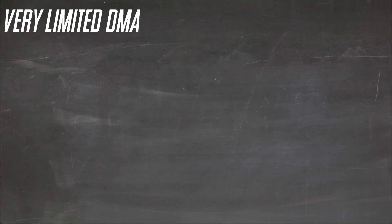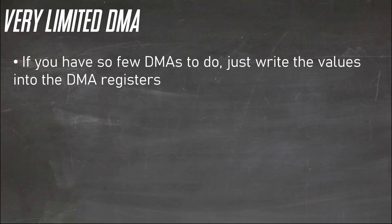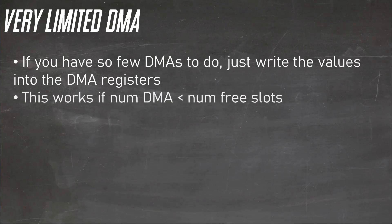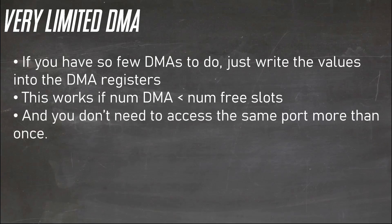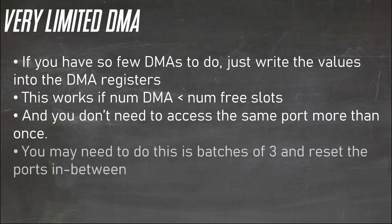If your DMA needs are small enough — i.e. less than the number of free DMAs you need — you can just write the DMA registers in prep rather than filling in DMA data on the stack. Then when it comes time to do the DMA, you simply write the enable byte and let it fire them all. This only works if you only have a single DMA to each port, though all the same parts are continuous in RAM. So you might need to batch these into three and reset ports in between.